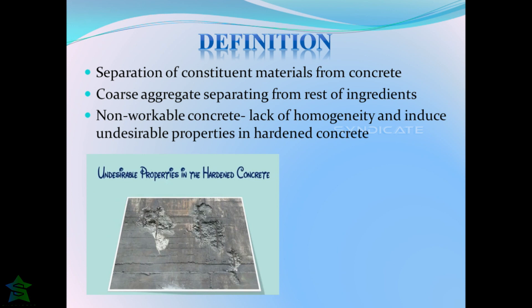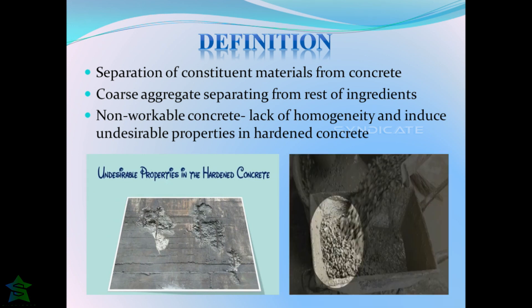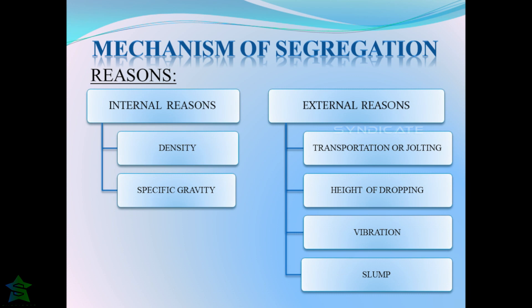The constituent materials include coarse aggregate, fine aggregate, cement, and water. This means there is variation of coarse aggregate content at different places. As coarse aggregate forms the bulk volume of concrete when compared to other materials, this forms an unworkable concrete which lacks homogeneity and induces undesirable properties in hardened concrete.